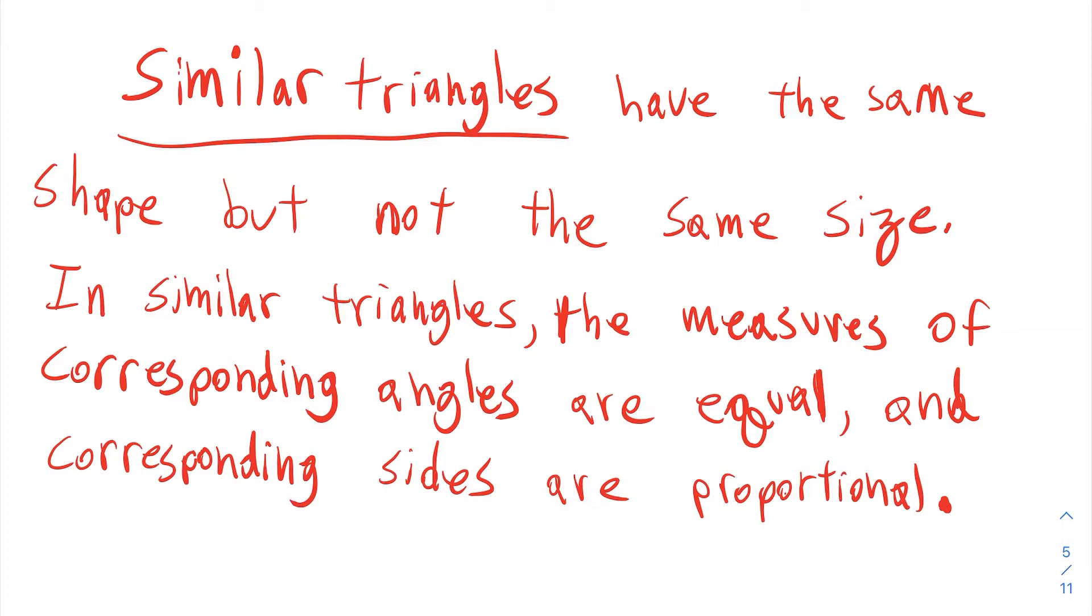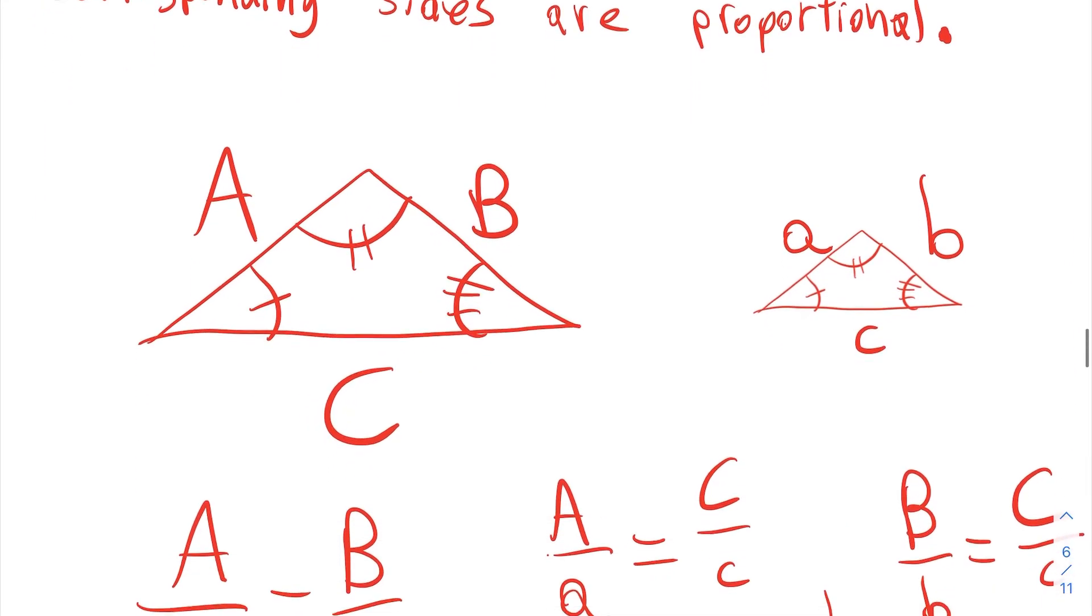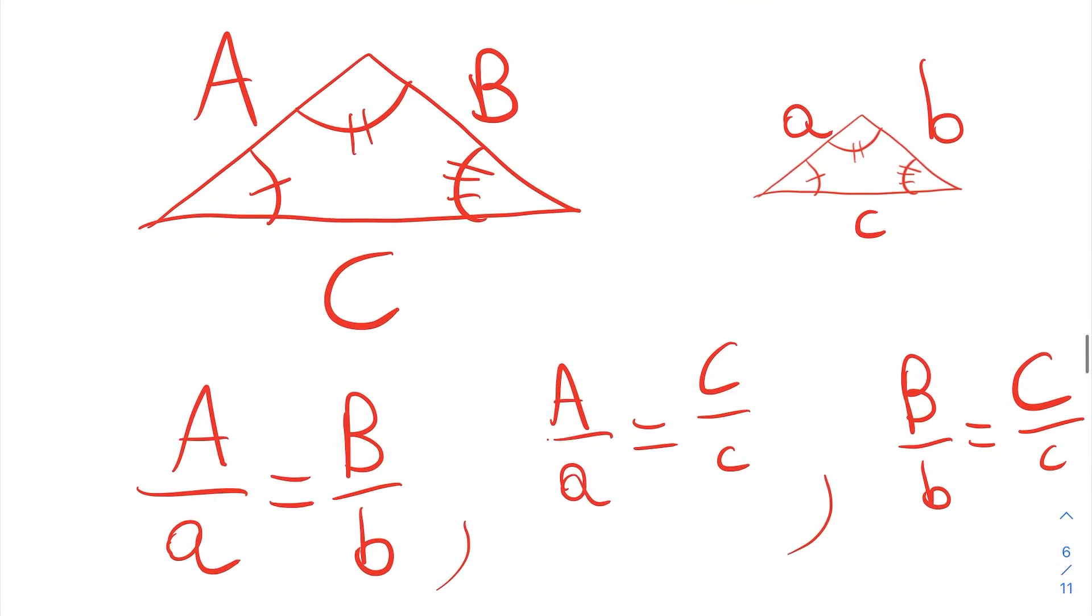The measure of corresponding angles are equal, but the measures of corresponding sides are proportional. Taking a look here, here are two triangles. They're the exact same shape, but one is smaller than the other.